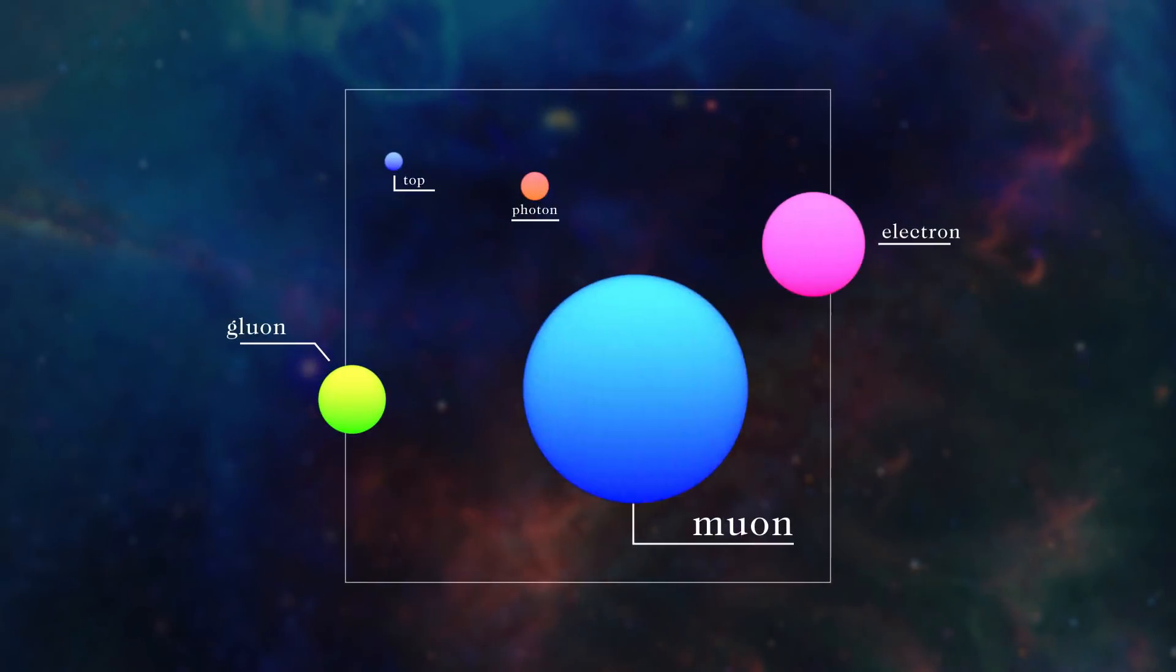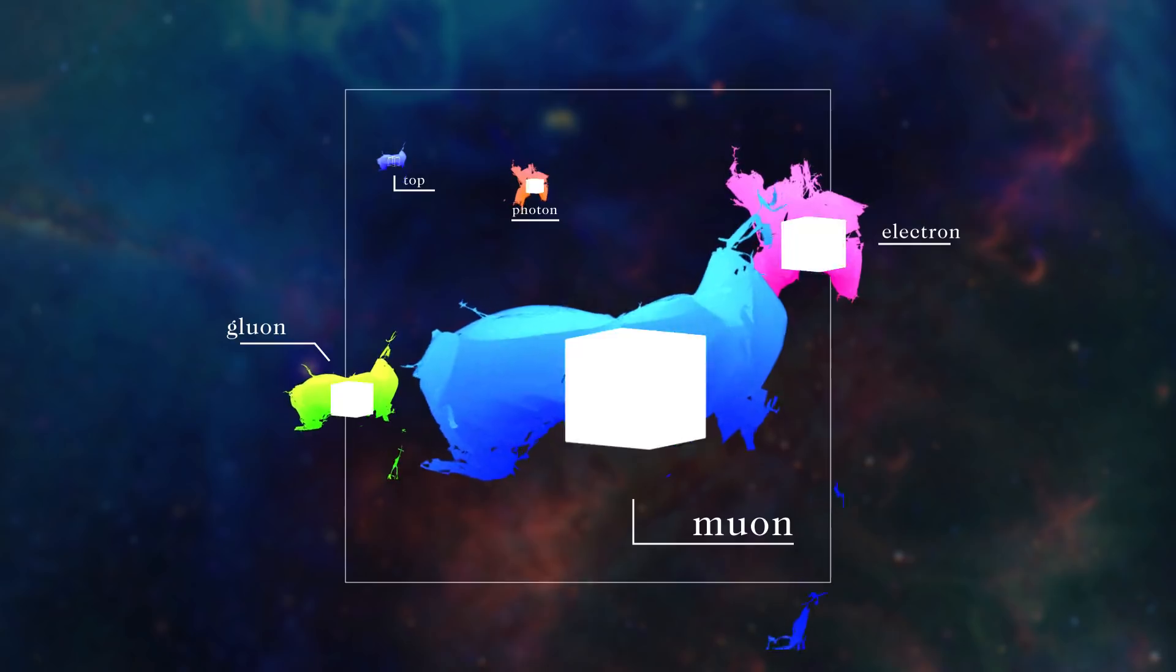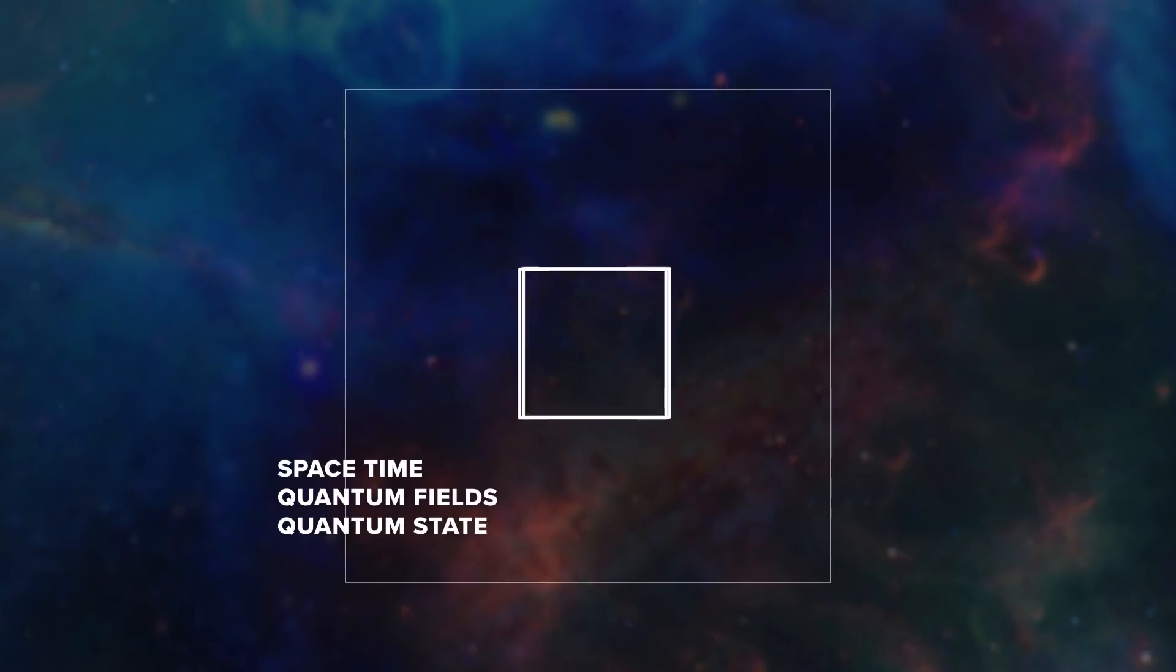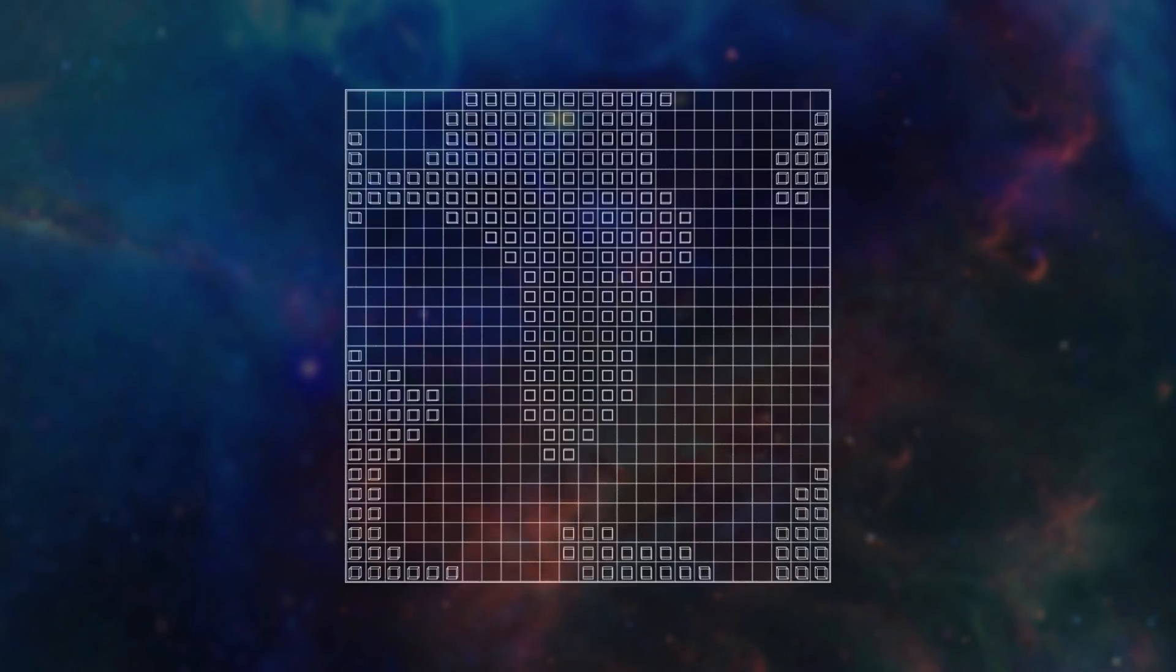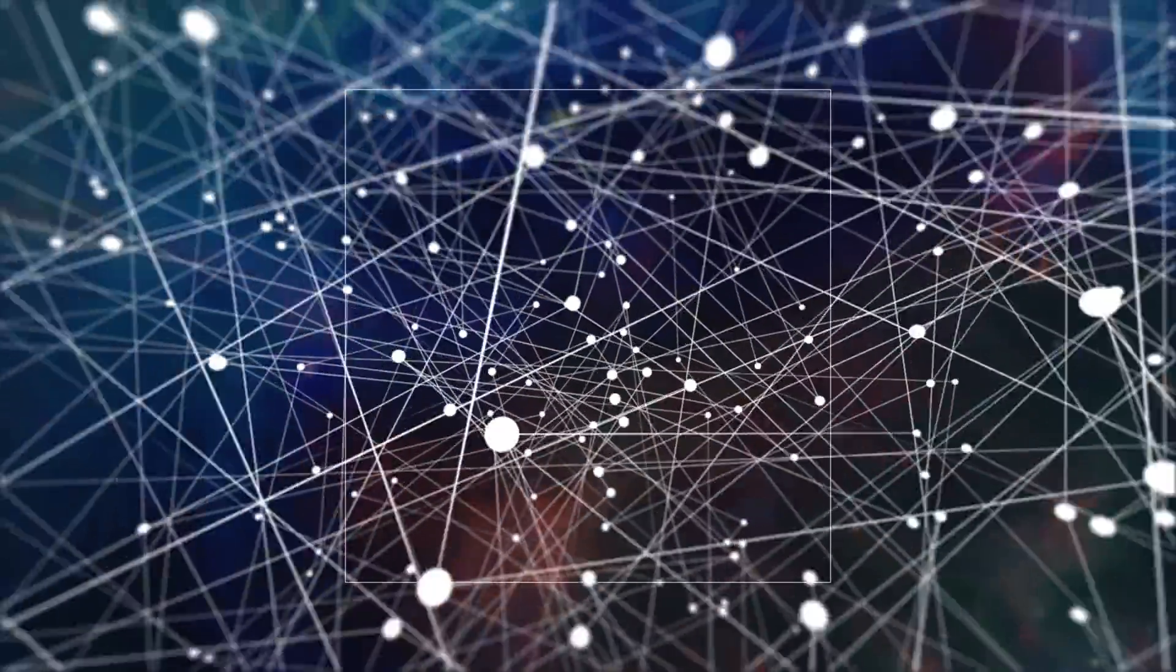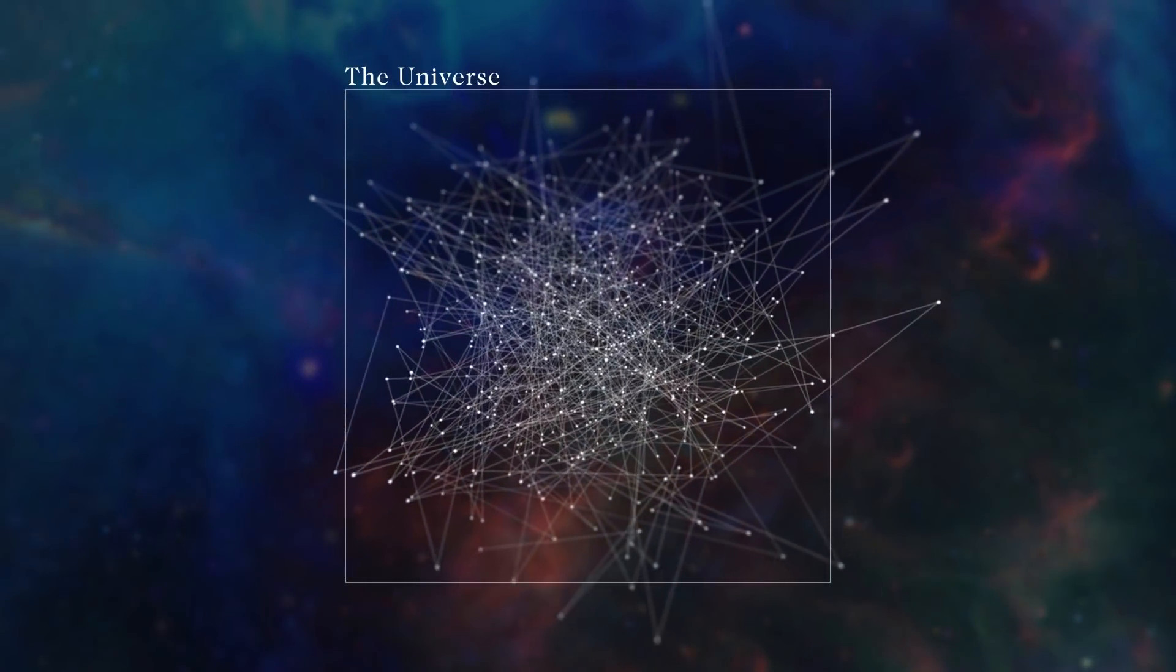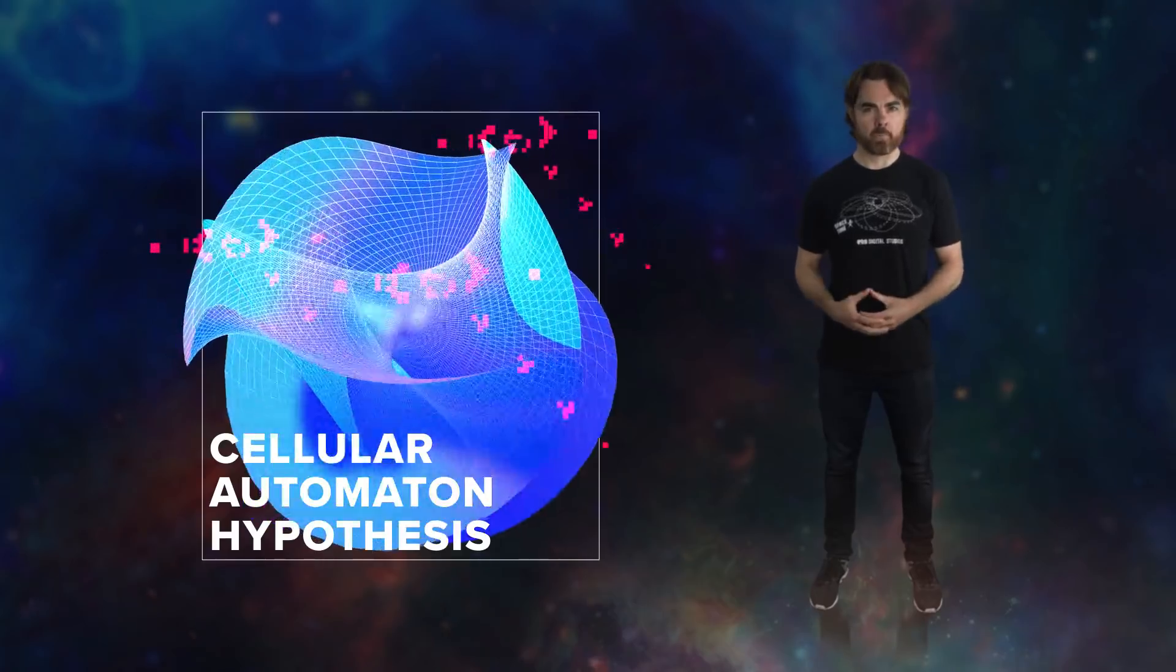Imagine a universe in which the most elementary components are stripped of all properties, besides some binary notion of existence or non-existence. Like if the tiniest chunks of spacetime or chunks of quantum fields or elements in the abstract space of quantum mechanical states can either be full or empty. These elements interact with their neighbors by a simple set of rules, leading to oscillations, elementary particles, atoms, and ultimately to all of the emergent laws of physics, physical structure, and ultimately the universe.